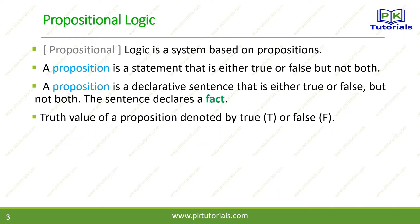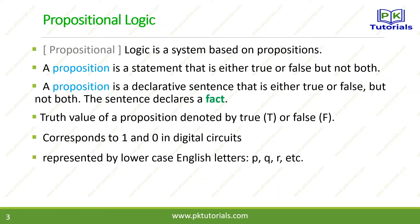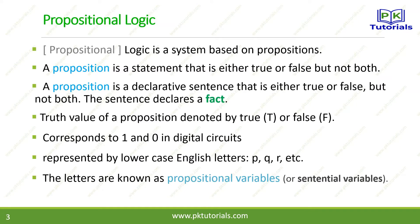The truth value of a proposition is denoted by T for true and F for false. It also corresponds to one and zero in digital circuits — a circuit has a value of one for true and zero for false. Propositions are represented by lowercase English letters like P, Q, R, S, etc. These letters are known as propositional variables, or sentential variables, because they represent sentences.